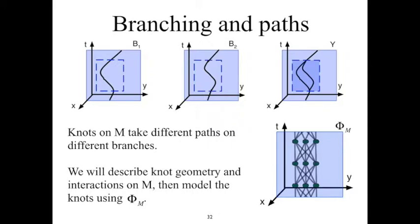The knots on M take different paths on the different branches. We will begin by describing the knot geometry and the interactions on M, and then show how to model that knot geometry and interactions using the unbranched manifold Φm, where that model will take a form resembling the diagram on the lower right.